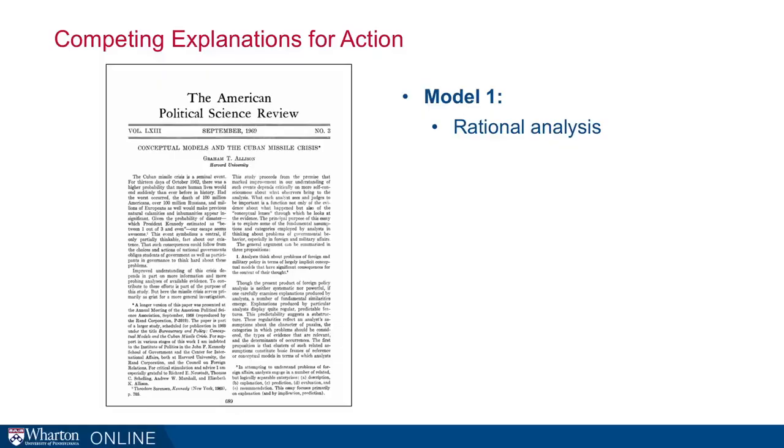In 1969, political scientist Graham Allison published a profoundly influential paper called 'Conceptual Models and the Cuban Missile Crisis.' His motivation was to suggest that there were multiple ways we could understand why countries do what they do, and yet political science had only focused on one of those ways. He used the Cuban Missile Crisis as a case study to illuminate three different models for explaining international and governmental behavior.